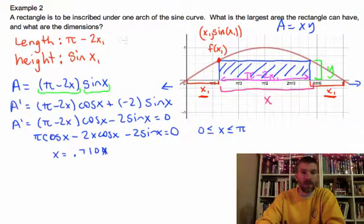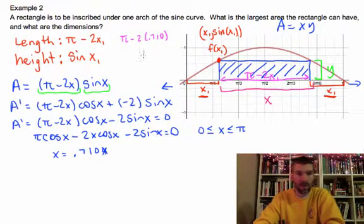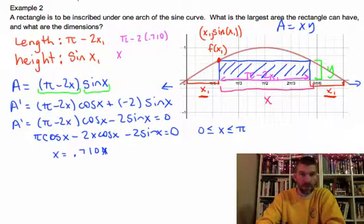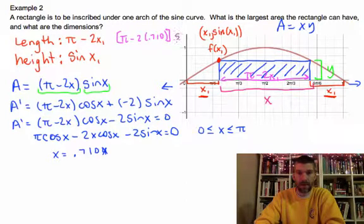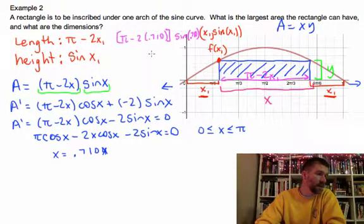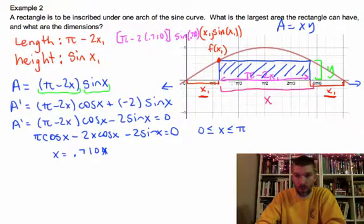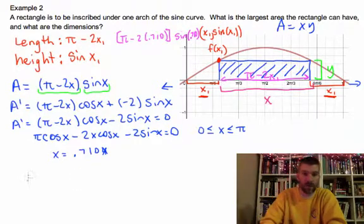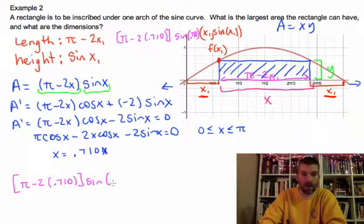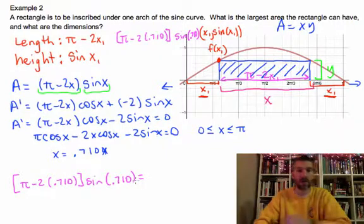That's my value of x, which occurs between zero and π. That allows me to have the largest area rectangle. That means that my length is going to be π minus 2 times 0.710 times the sine of 0.710. When you punch all that in together, that's going to give us the area of the rectangle that fits under one arch of the sine curve. So we're gonna have (π - 2(0.710)) times sin(0.710). Punch that into your calculators and see what you get.